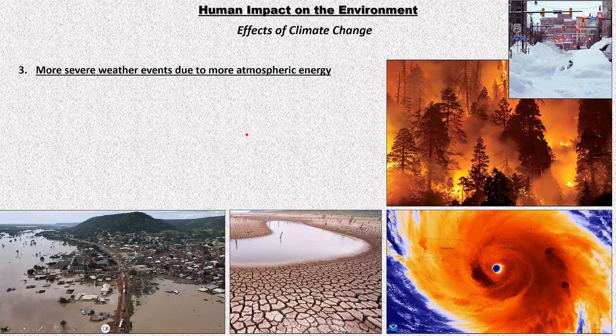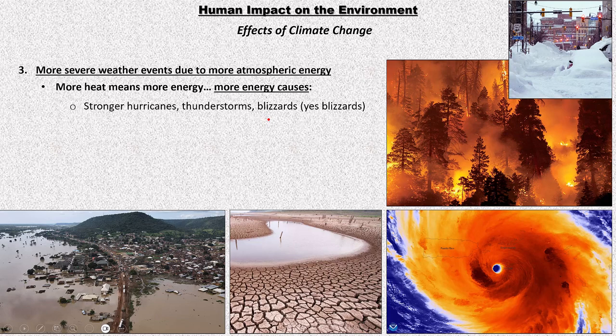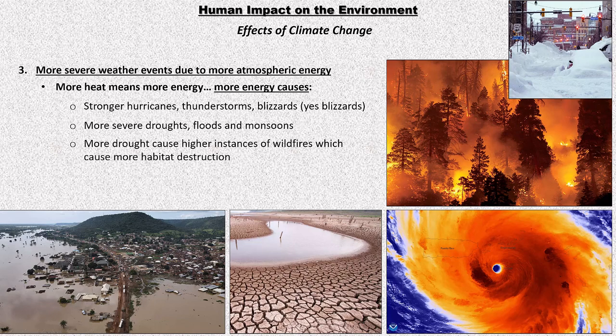More severe weather is also a big impact. If you have more energy in the atmosphere, that causes stronger hurricanes, thunderstorms, and blizzards. More heat means more energy, so more rising and sinking air — a more dynamic atmosphere with stronger storms of any type, including blizzards. You could have more severe droughts, floods, and monsoons, bigger dips in the jet stream bringing colder air to areas like southern Florida, and higher instances of wildfires causing habitat destruction. Lakes and rivers drying up causes even more habitat loss.